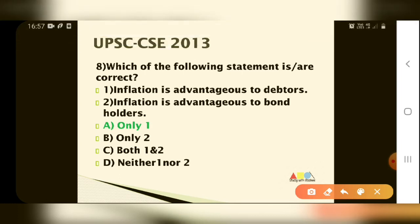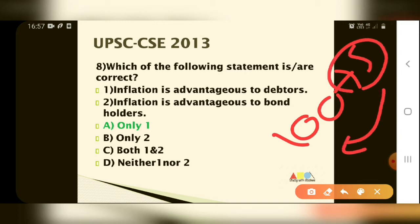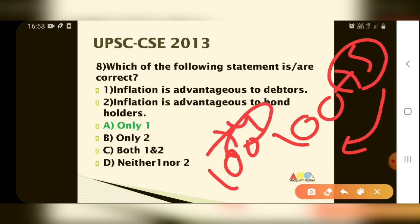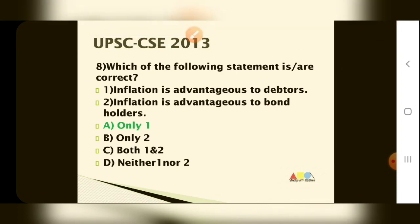The loan giver gives 100 rupees. When inflation occurs, the value of that 100 rupees goes down. So the loan giver — the creditor — suffers a loss during inflation. This means the debtor benefits and the creditor has a loss. Now, what is the case with the bond holder?